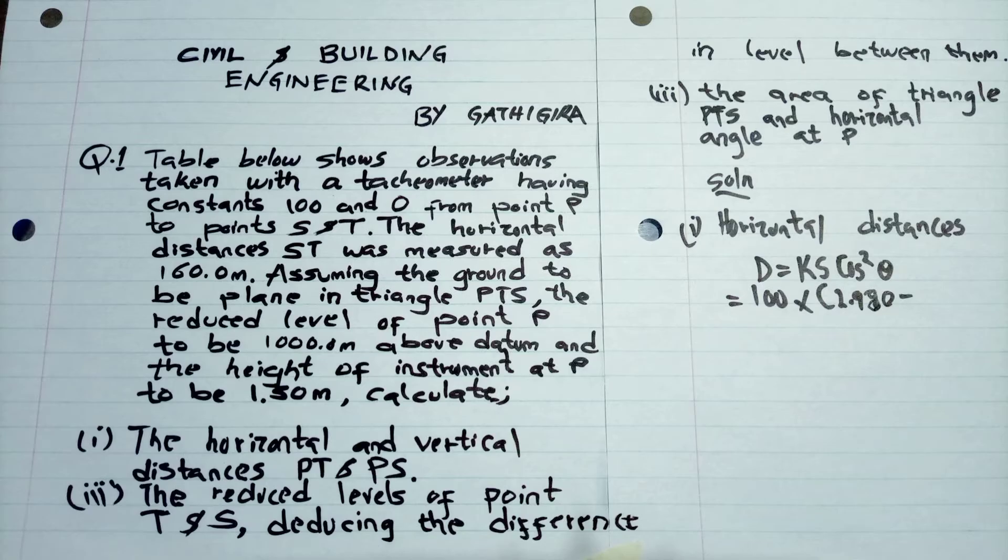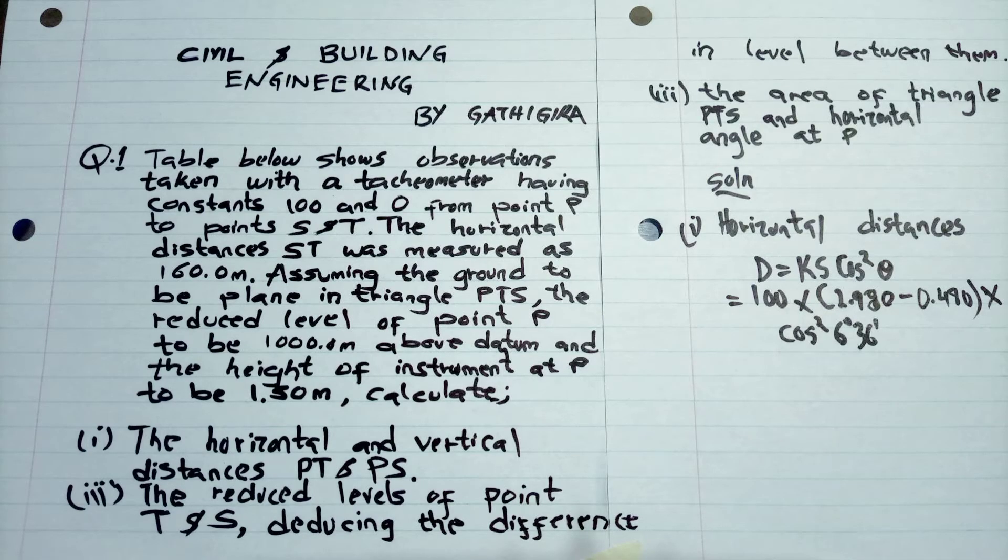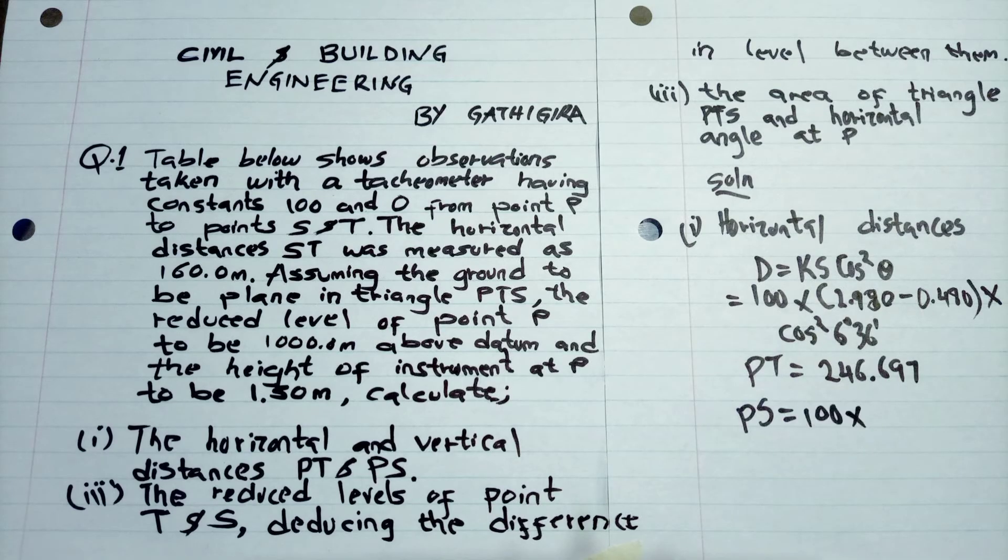D equals K times S times cos squared theta. So K is the constant 100, S is the difference between the top and the lower readings, times cos squared 6 degrees 36 minutes. So we get that's the answer.